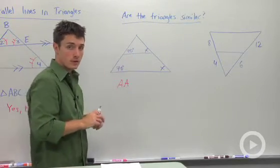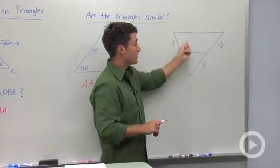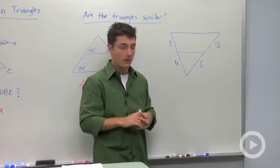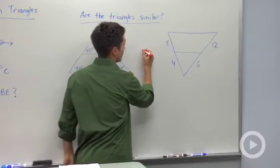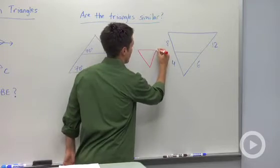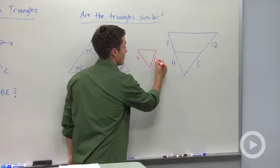Now let's look at one other example. Here we have a triangle, and again, we don't have anything that's marked parallel. So what I'm going to do is I'm going to redraw my smaller triangle here.